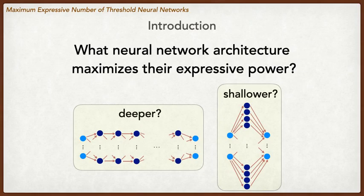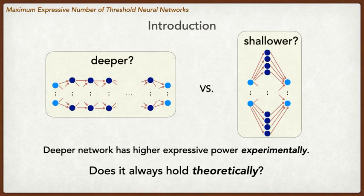In machine learning, a fundamental question is: what structure of neural networks maximizes their expressive power? We experimentally know a deeper network has higher expressive power than the shallow one, but does it always hold theoretically? We will answer this question by studying expressive power with a mathematical approach.